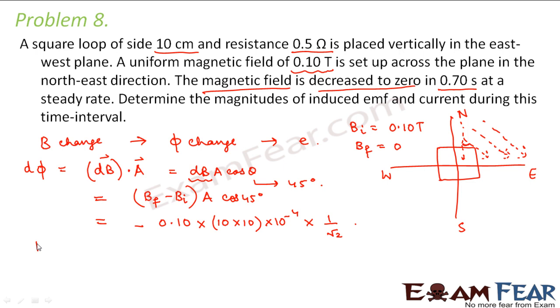So now we have to calculate the EMF induced, which is equal to minus D phi by DT. So what is D phi? D phi, this minus minus will get cancelled. So D phi is 0.10 into 100 into 10 to the power minus 4 divided by root 2. This is D phi by DT. What is DT is the time interval in which the change took place.